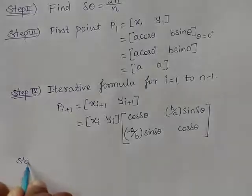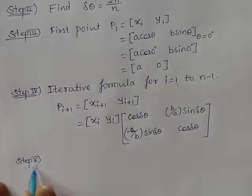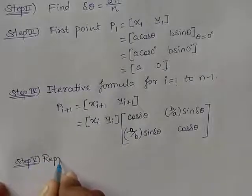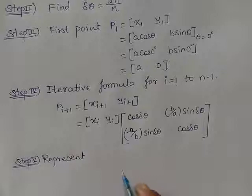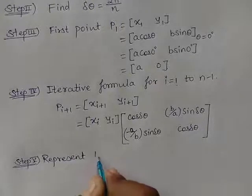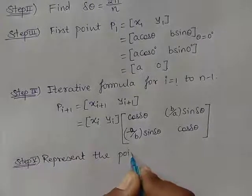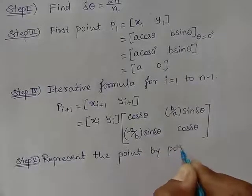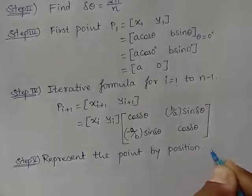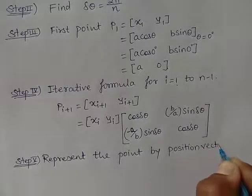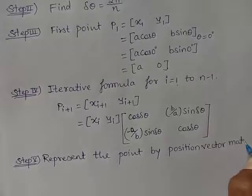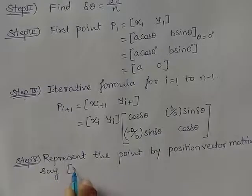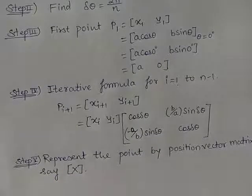Step 5: represent the point by position vector matrix, which we will name X.